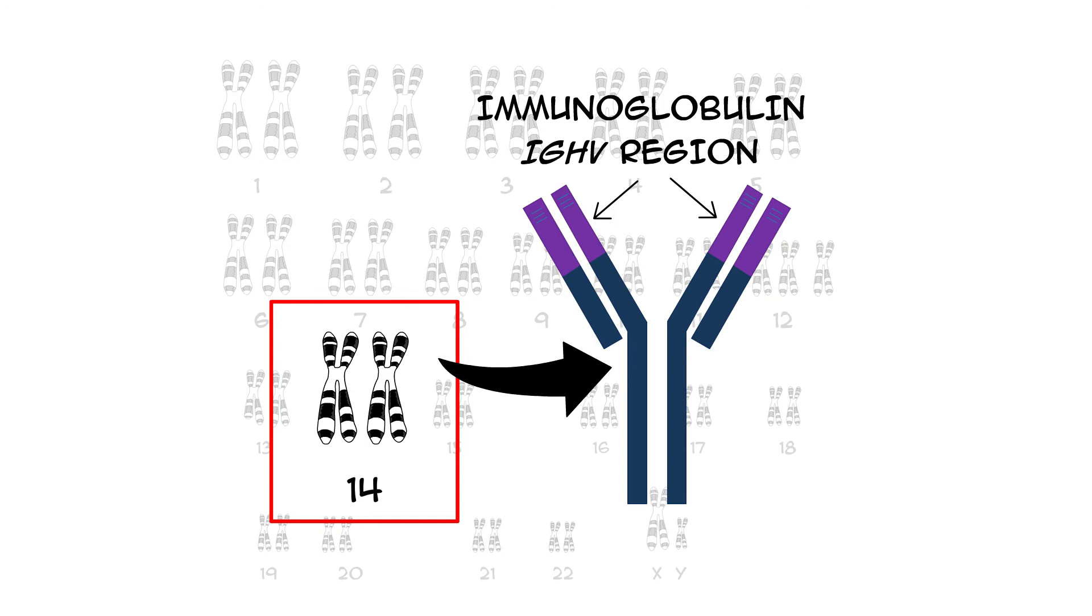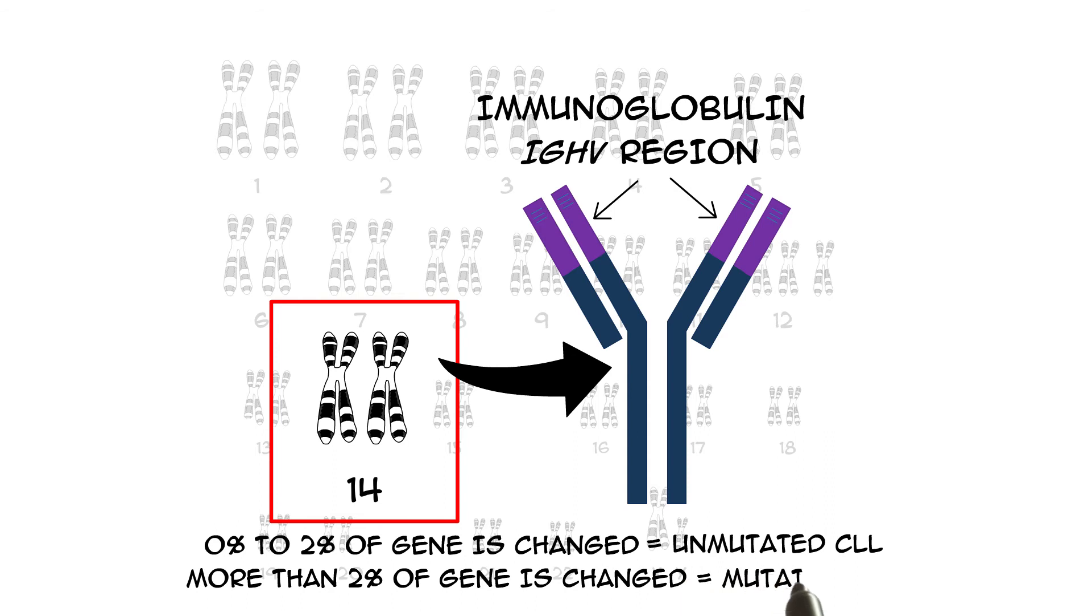Some people's CLL cells contain changes to this gene. If 2% of the gene or less is changed, scientists call that patient's CLL unmutated CLL. If more than 2% is changed, they call it mutated CLL.